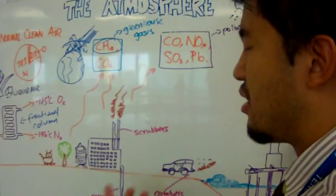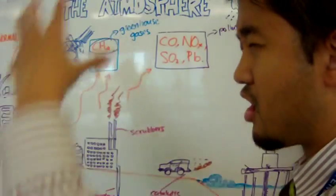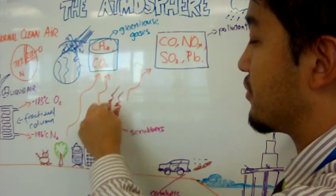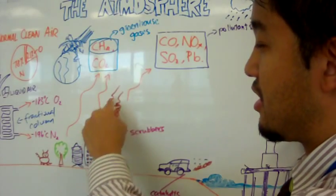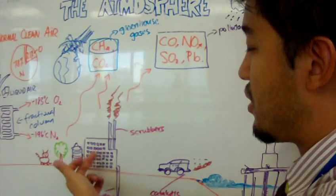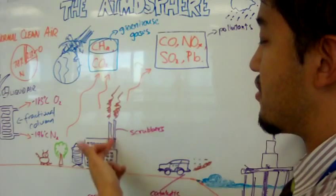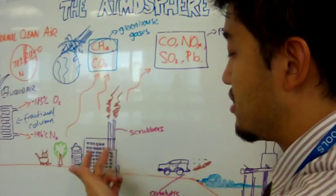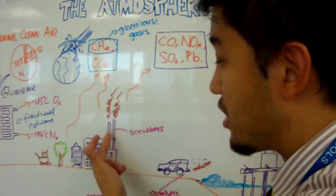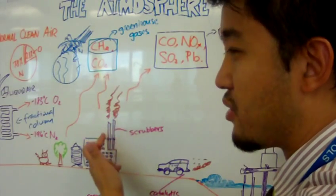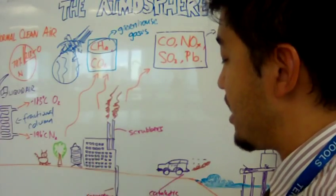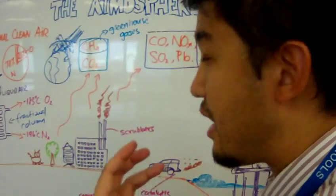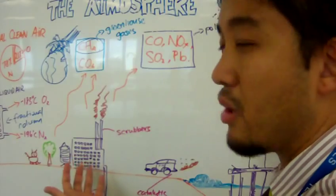Factories use scrubbers. Scrubbers are basically limestone or chalk placed inside the factory pipes — the flues that allow gases to escape. When acidic substances like sulfur dioxide or nitrogen dioxide react with water vapors in the combustion gases, they form acidic molecules as they travel up the flue. The acid reacts with the chalk or limestone and gets neutralized inside. These things inside are called scrubbers — they scrub out the acidity that would otherwise be emitted outwards.